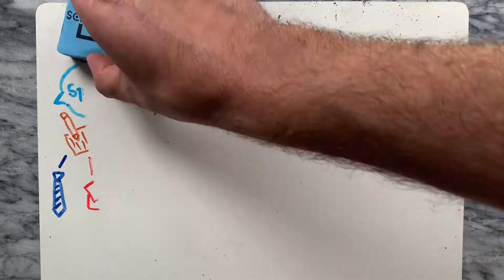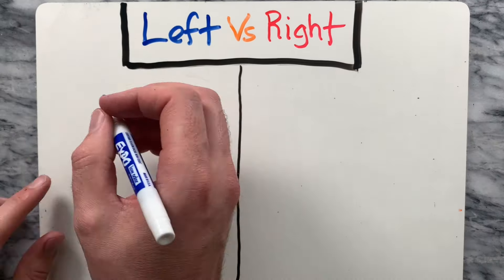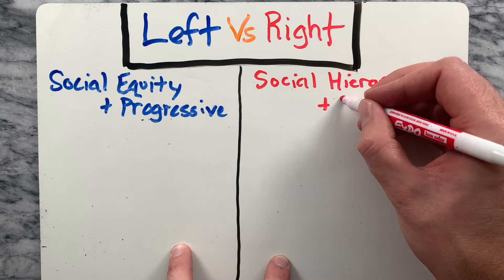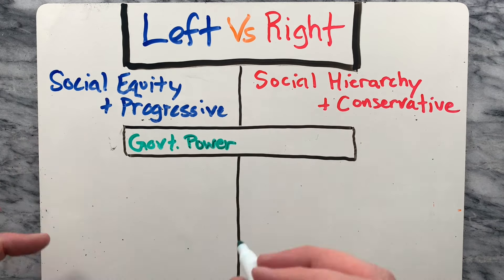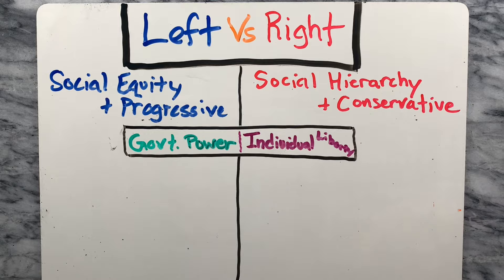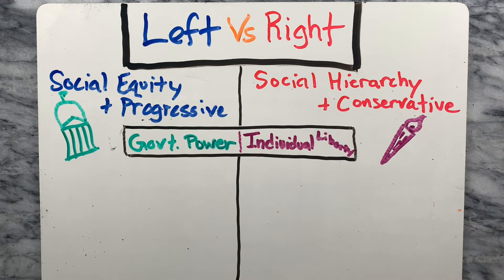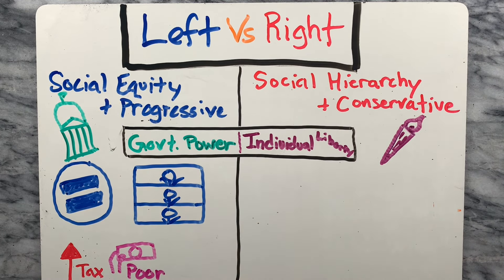So what exactly does left and right mean? The left-right political spectrum is used to describe political positions, ideologies, and parties, from social equality and progressive ideologies on the left to social hierarchy and conservative ideologies on the right. For example, if we look at the balance between government power and individual liberty, the left would strive for an equal society and support the government playing a large part in people's lives in order to achieve this. They tend to support higher taxes on the rich, welfare for the poor, and government regulation of business and the economy.